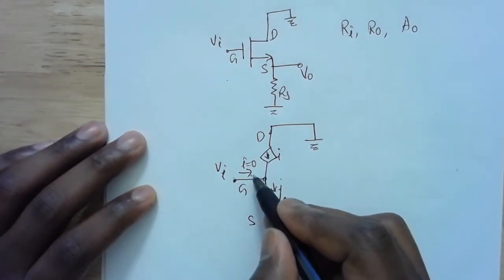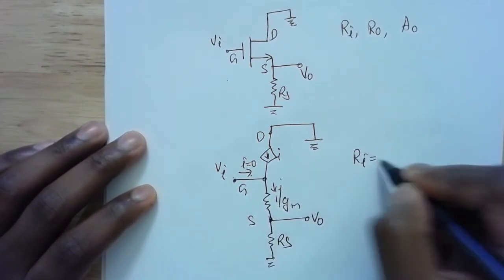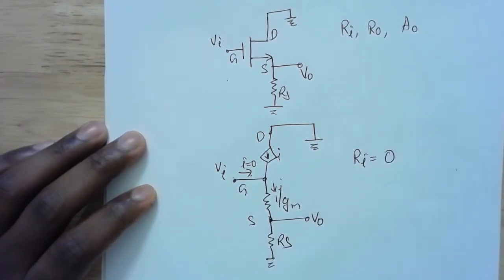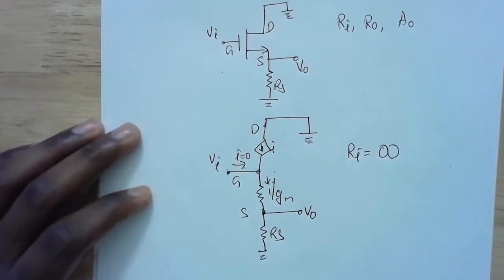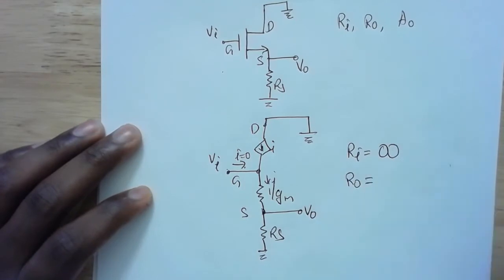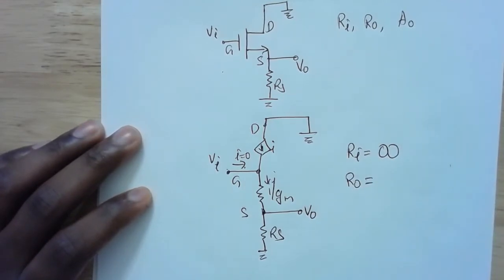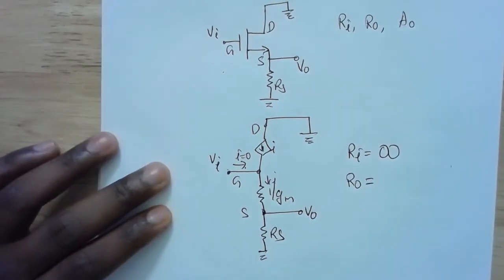Since the input is applied at the gate and the current going into the gate is zero, my input impedance ri is infinite.